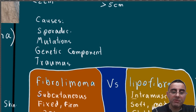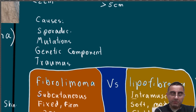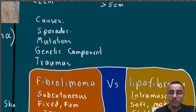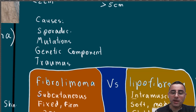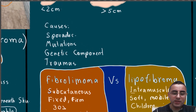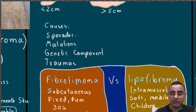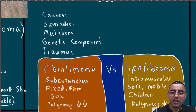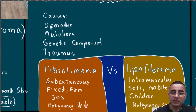Fibrolipomas are usually more firm during palpation and more fixed, while lipofibromas are more soft and more mobile. Fibrolipomas are more common in middle-aged and older adults, while lipofibromas are more common among children.